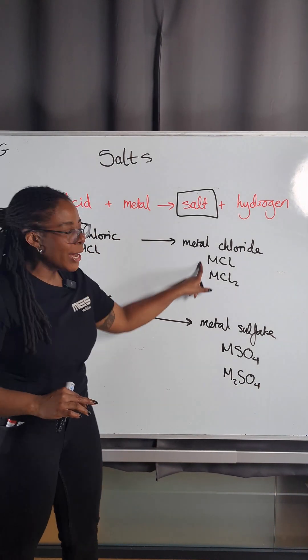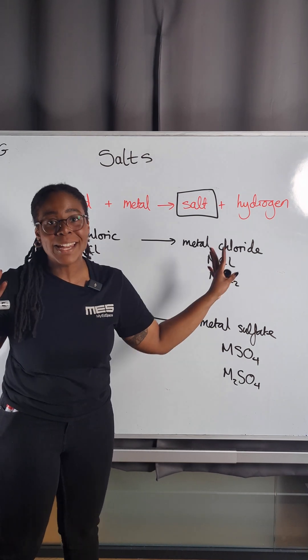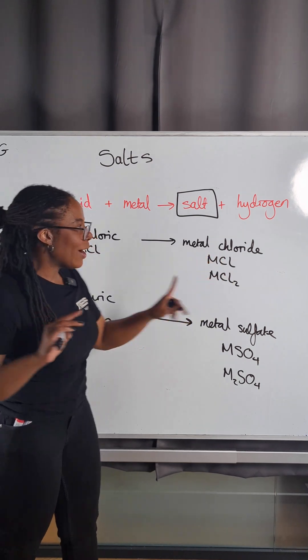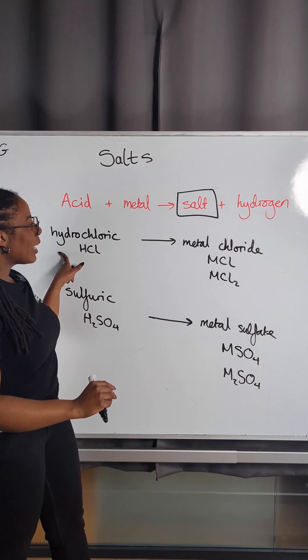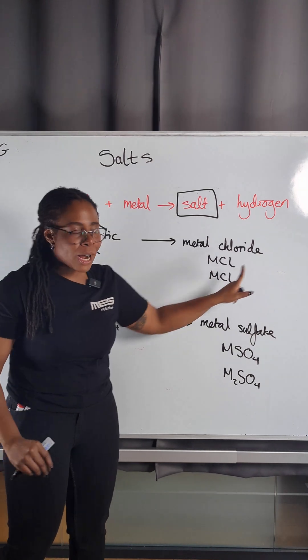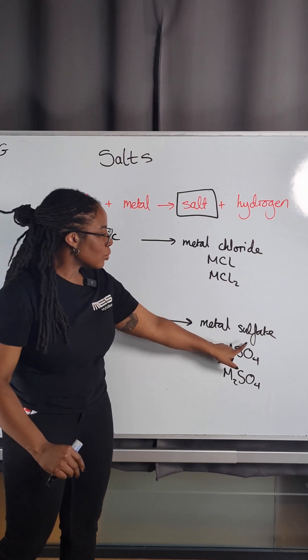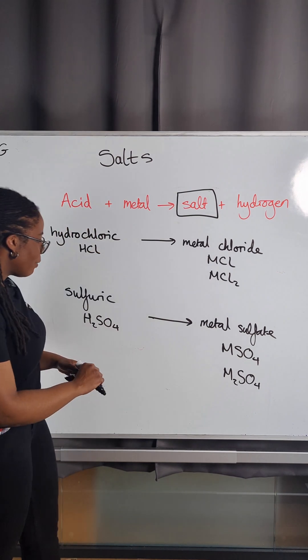We can speak more about these formulae later on, but for now: hydrochloric acid gives a metal chloride, and sulfuric acid gives a metal sulfate.